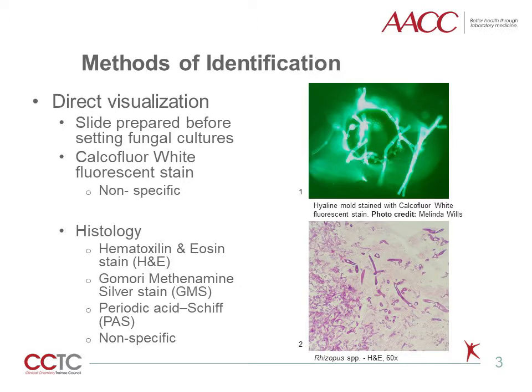Molds can be identified in the clinical laboratory using different approaches such as direct visualization of the organisms in slide preparations. In the microbiology laboratory, this is done by taking a small drop or piece of the specimen and staining it before setting up cultures. The specimen is then stained with calcofluor white fluorescent stain, as you can see in image one. This method is fast to perform and mold structures are easily visualized.